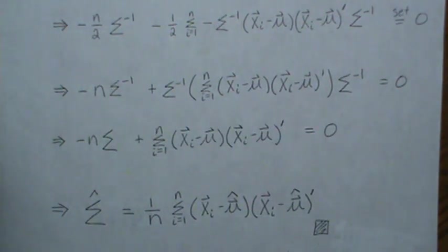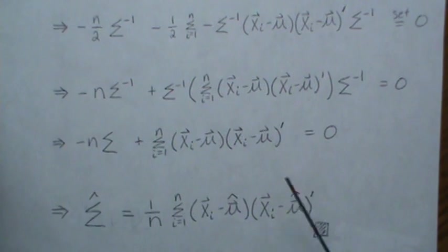Subtract that to the other side, divide by minus n. We get this, and so this is a matrix and that is the MLE for sigma.